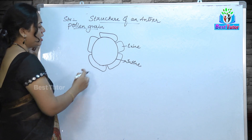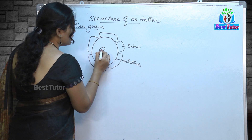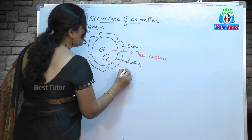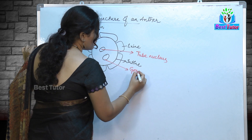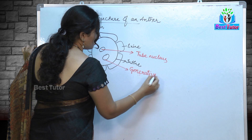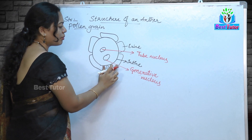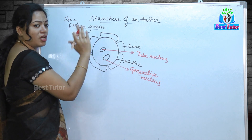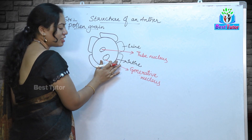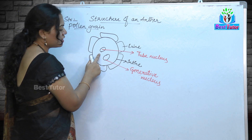Inside the pollen grain, the male gamete, we have two nuclei. One is known as the tube nucleus and the other is known as the generative nucleus. The exine protects the pollen grain from external changes or injuries, and the intine is the inner membrane covering.